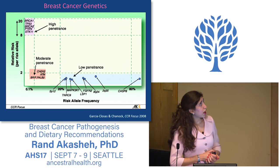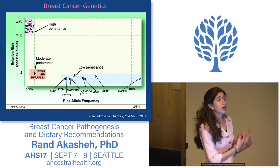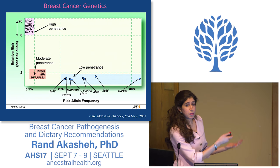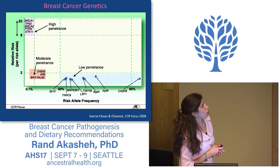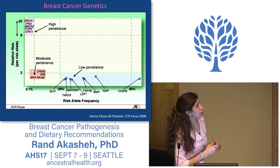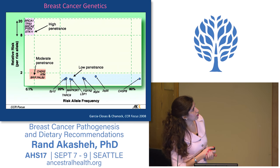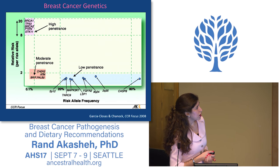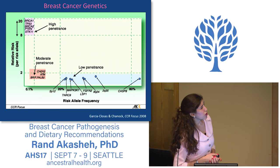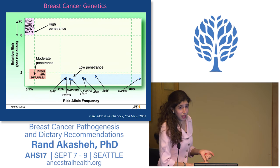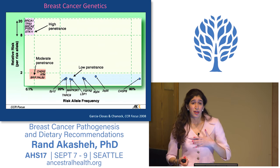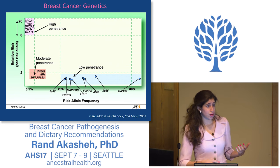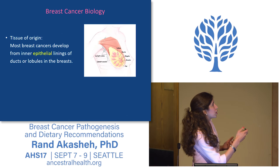We have genes of high penetrance, meaning that when an individual has them, they're very likely to get the specific cancer. These include BRCA1, BRCA2, and p53. We also have moderate penetrance genes like CHEK2 and ATM, and low penetrance genes that are responsible for fewer cancer cases. These are more like risk factors or polymorphisms rather than mutations that directly lead to cancer — weaker in terms of breast cancer risk.